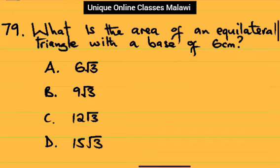In this video, we want to solve this question number 79 from one of Mariah College of Behavior Sciences past papers, entrance exams level. The question is, what is the area of an equilateral triangle with a base of 6 centimeters?